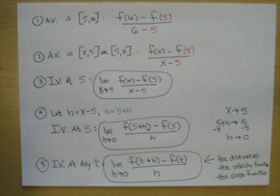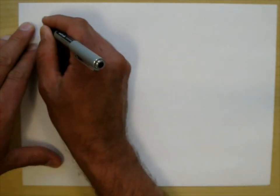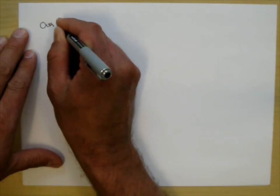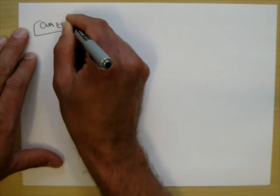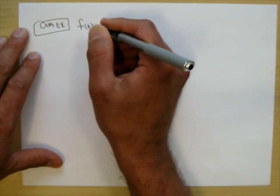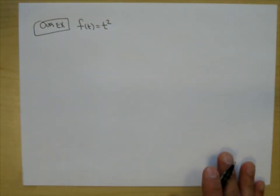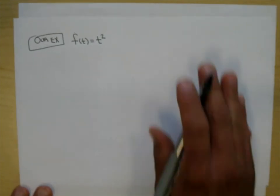I know some of you are going, 'I don't know what is happening.' Remember how we guessed what our instantaneous velocity was at a time? We don't have to guess anymore. Let me run you through an example and show you what we're doing. Our example is F of t equals t squared.